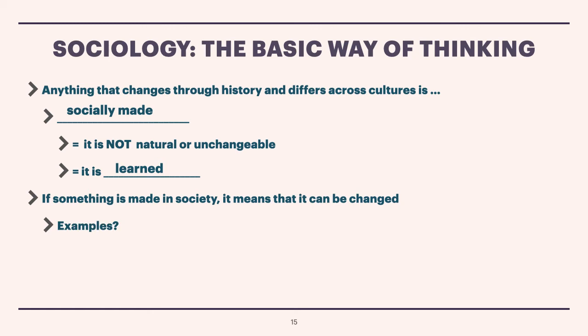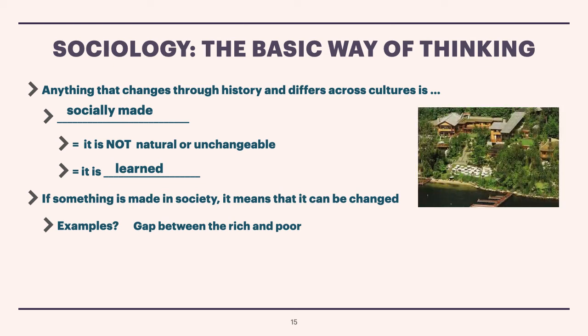The very basic way of thinking in sociology is this: anything that changes through history and differs across culture is socially made. When something is socially made, it means that it is not natural or unchangeable — that means it is learned. If something is made in society, it also means that it can be changed. Some examples are the gap between the rich and the poor. Inequality is not something to be taken for granted. Inequality probably involves something that relates to how society works, and it is something that we can change. Let us look at this picture — it looks like an island with a lot of houses, but actually this is the residence of just one person and his family. That's Bill Gates' house.